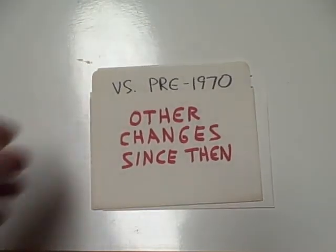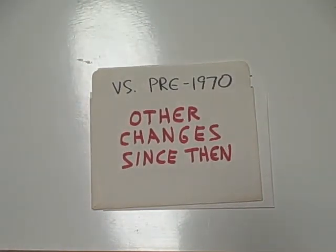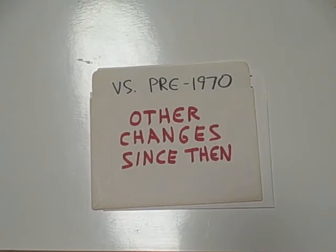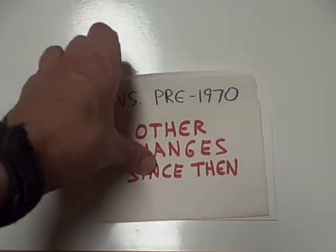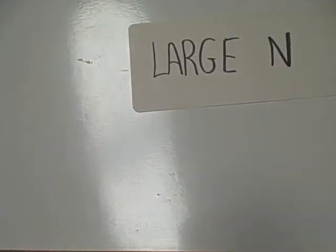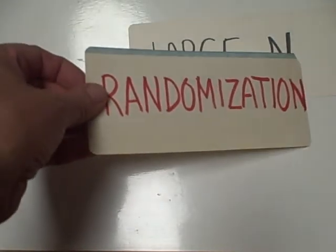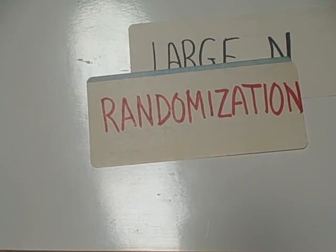We could compare present Chinese children with data on personality traits of Chinese children pre-1970, when the one-child policy was adopted. Unfortunately, there have been a lot of other changes in China since then, especially changes in economics. If we want a solution to the problem of confounding variables, the best solution is a large sample size. With a large sample size, we can do better randomization of these variables.